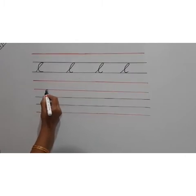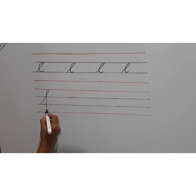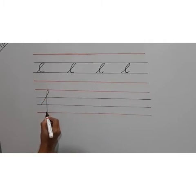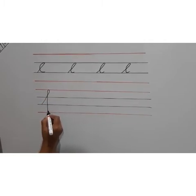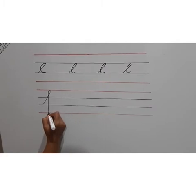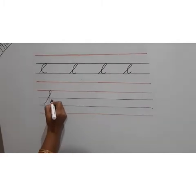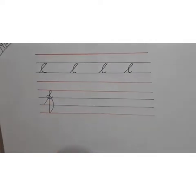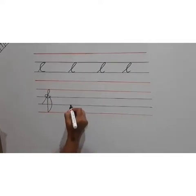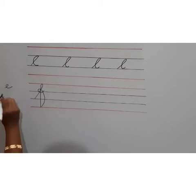Then after that you have to come straight line down. Then without moving your hand, without taking up your hand, again you go up and turn like a knot. How we make a knot? Like this.